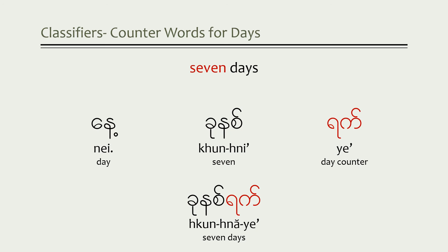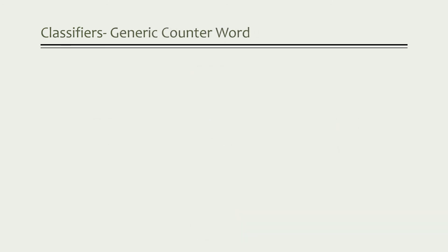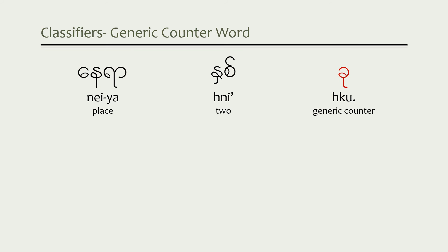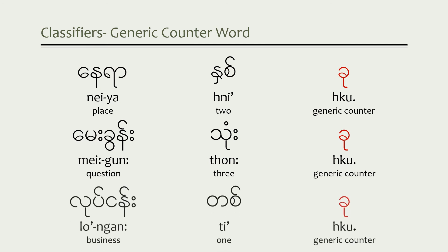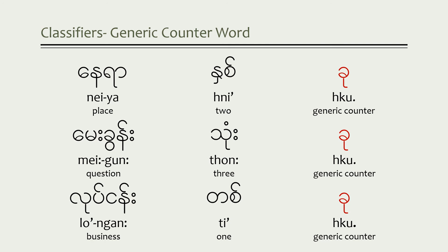Now there are so many counter words to learn. What can you do if you don't know the correct counter word for a noun? The good news is there's a counter word you can use when you don't know the right one — it's pronounced 'ku'. For example: the counter word for place is 'ku', so two places would be 'nea naku'. The word for question is 'megun', so three questions is 'megun tongku'. The word for business is 'longan', so one business is 'longan tuku'. Until you learn the matching counter words, you can try using 'ku', but try to learn a few basic ones first.